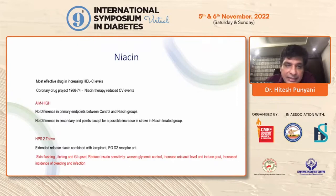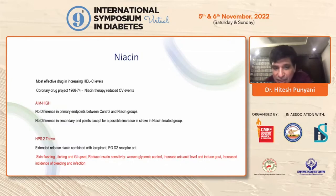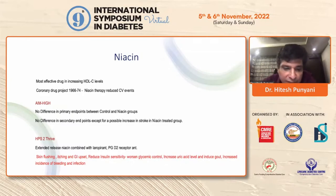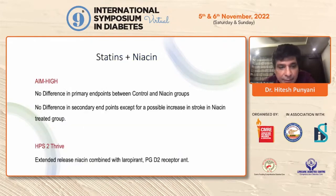Niacin — when initially used in 1966 and 1974 alone, it was found to reduce CV events. But when combined with statins in AIM-HIGH and HPS2-THRIVE, we could not get much additional benefit from increasing HDL levels. In fact, there was an increase in stroke in the niacin-treated group in the AIM-HIGH study. Skin flushing is a very famous side effect leading to a lot of dropouts. Niacin also causes reduced insulin sensitivity, worsening glycemic control, and increased uric acid levels.